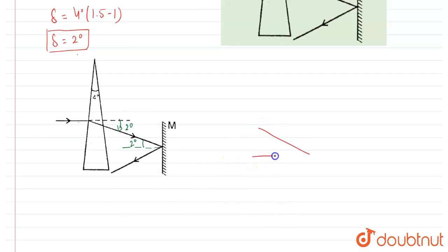In between the incident and reflected ray, means our normal should be here, and that angle is 1 degree and that angle is 1 degree.